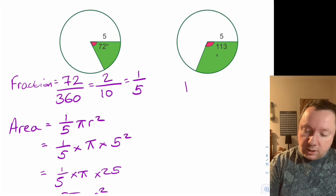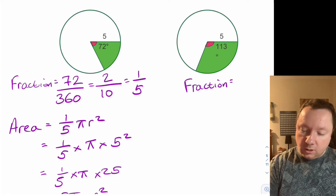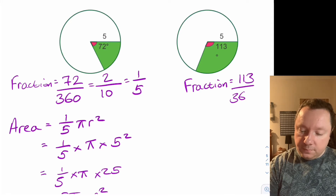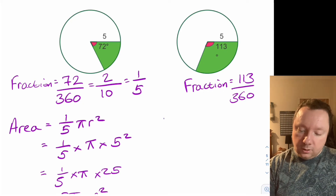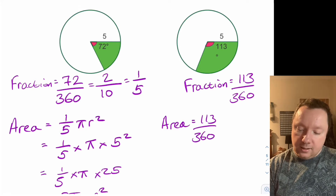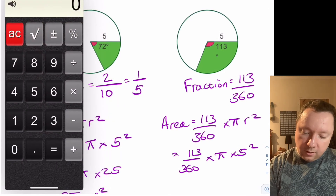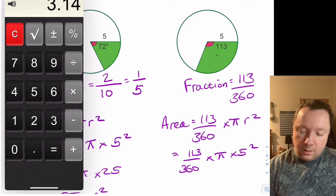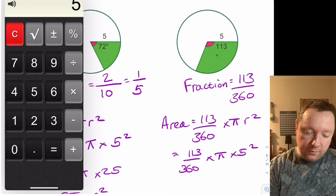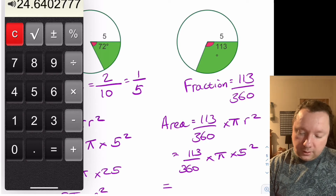For the second one, our fraction is 113 out of 360. We can't really simplify that very well, so using a calculator the area is 113 over 360 times pi r squared, which is 113 over 360 times pi times five squared. Using a calculator: 113 divided by 360, times pi — using 3.14 — times five times five, and you get your answer straight out: 24.64 centimetres squared.